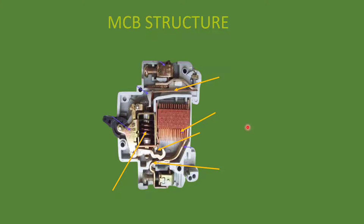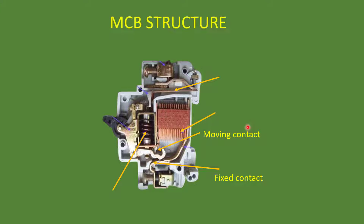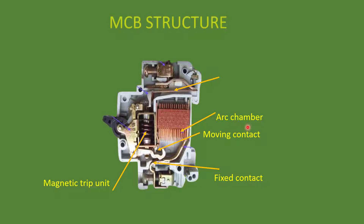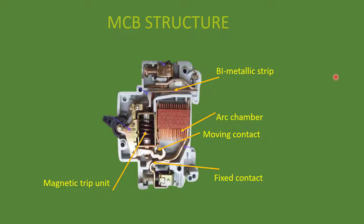Let's look at the components of an MCB and its working principle. Every breaker has two contacts in common: a fixed contact and a moving contact — electricity flows through these contacts. There is also a magnetic trip unit, which is the short circuit protection mechanism, and an arc chamber, used to extinguish the arc. Then there is a bimetallic strip, which is the overload protection mechanism. So in an MCB, the magnetic trip unit provides short circuit protection and the bimetallic strip provides overload protection.